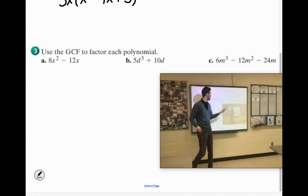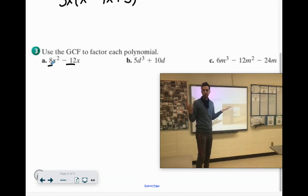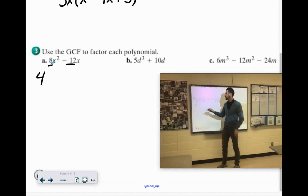Use the GCF to factor each polynomial. We have to figure out what they have in common first. So 8 and 12, you might be like, oh, well, 2 goes into those. Sure, it does. But 4 is the greatest common factor here. Do they both have x? Yeah. They both have at least x to the first power. Great. That's our common factor.